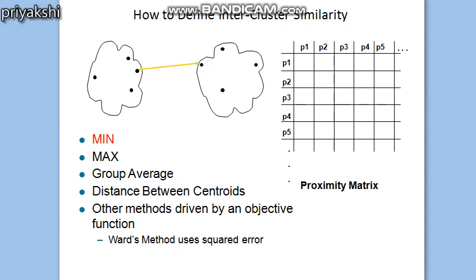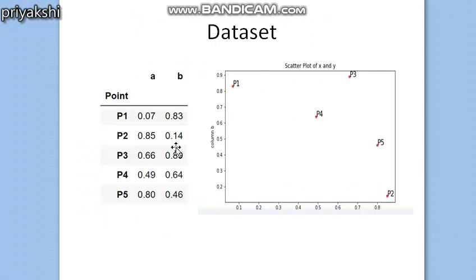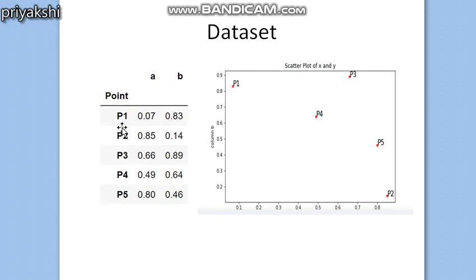Let's look at an example dataset. The dataset has five data points, each having attributes A and B. You can think of them as five students with their absence percentages in two different classes — one percentage recorded in class A and another in class B. We are going to cluster these five students using agglomerative hierarchical clustering with the minimum value, i.e., single-link hierarchical clustering.